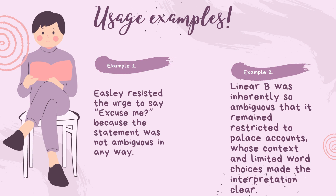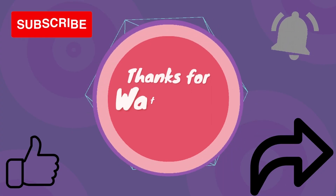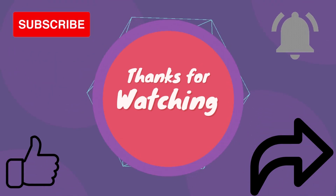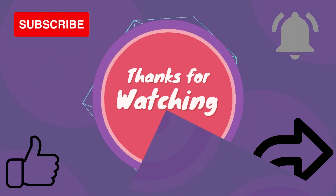Word family: ambiguous, ambiguity. Synonyms: uncertain, unclear, equivocal, indeterminate. Antonyms: certain, clear, definite, determined. Thanks for watching. If you find the video informative, please like and share our videos and subscribe to our channel.